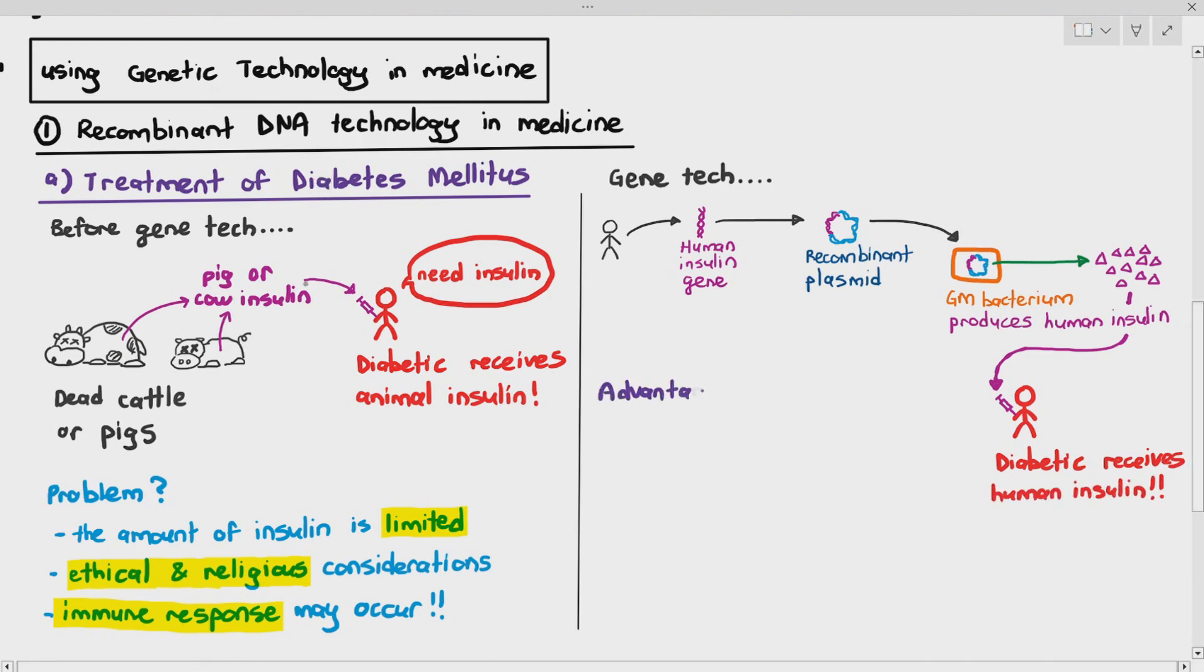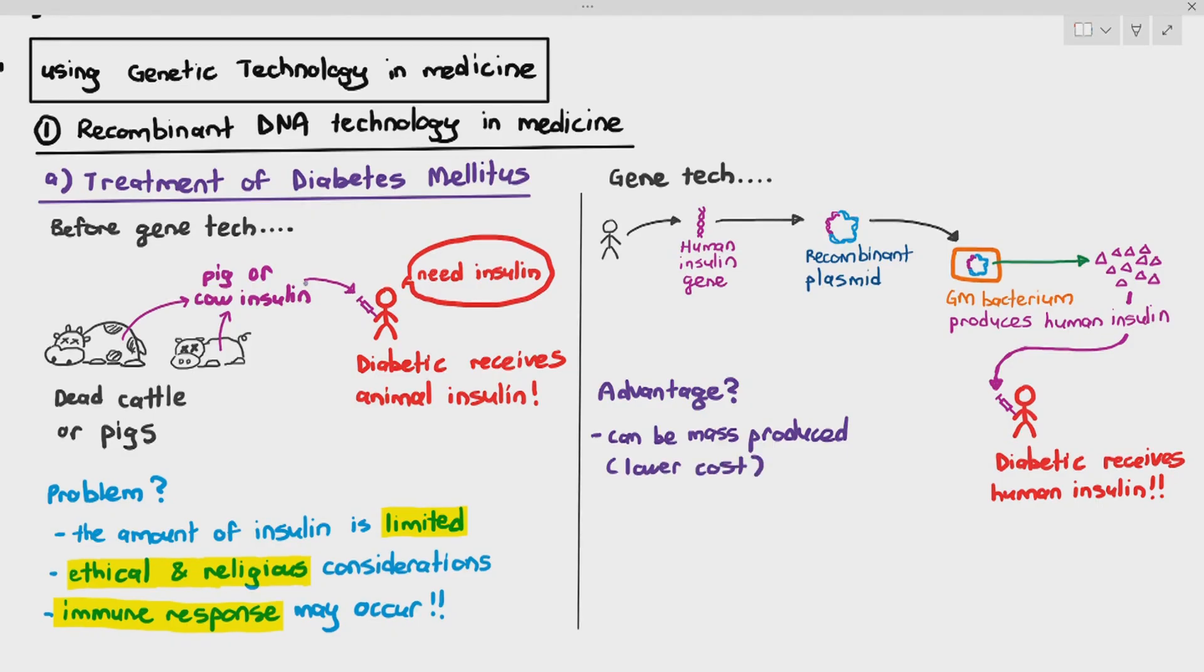What's the advantage? The advantage is we can mass produce this insulin very easily, and because it's mass produced, it will eventually lower the cost as well, because when mass production happens, one of the goals of mass production is to minimize cost. Of course, you can argue that in some countries, the price of insulin is skyrocketing, especially in the United States. But under normal circumstances, if the healthcare system cares about the people, it is in their best interest to keep the price of insulin low. There's also less ethical and religious issues, because this insulin did not come from the cattle or pigs. It came from a bacterium. So there's less ethical issues pertaining to bacteria, and that's fine.